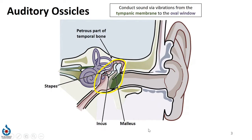You'll remember the auditory ossicles from our discussion of the middle ear. All three of these bones are found within the petrous part of the temporal bone, and they articulate with one another to lead from the tympanic membrane to the oval window. This will project forward the sound that was collected by the external ear through vibrations between these bones. You'll note as well that the tympanic membrane is a lot larger than the oval window, so by the time the vibrations get to the stapes, the stapes will be having about 10 times the strength of vibration than we see at the tympanic membrane.